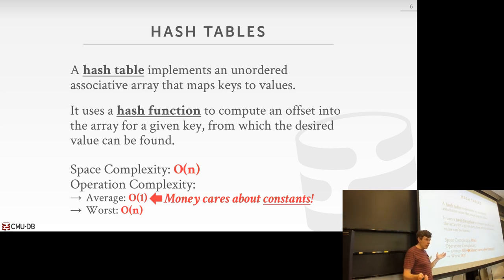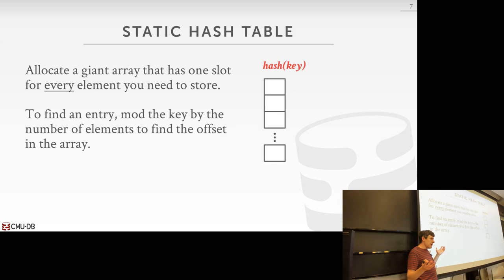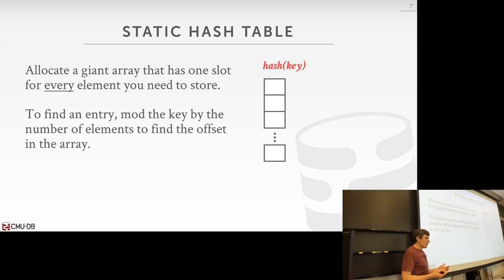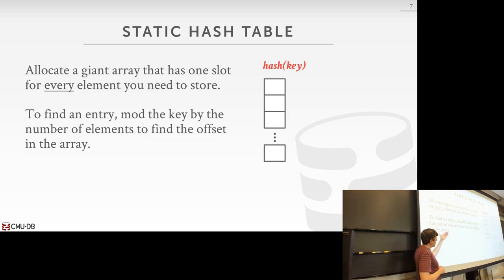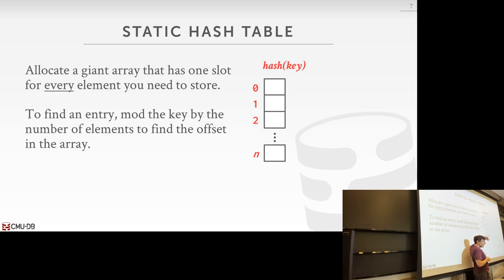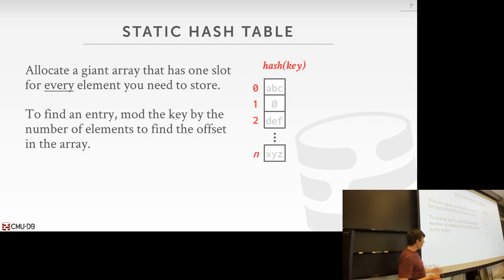The simplest hash table is just a giant array — malloc a big chunk of memory where every offset corresponds to a given element. For this to work, we assume we know exactly the number of keys ahead of time and know exactly their values. To find any key, we take the hash of the key, mod it by the number of elements, and that gives us the offset — exactly the thing we're looking for.